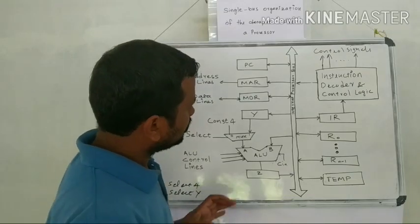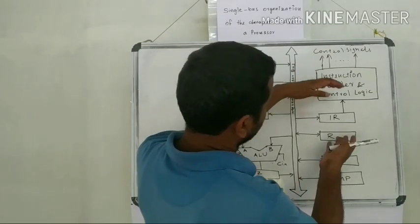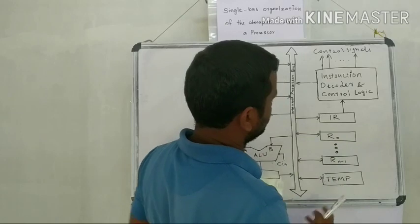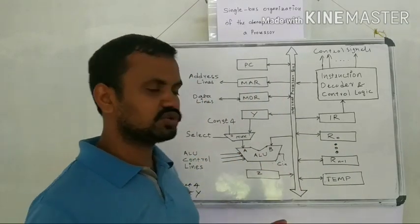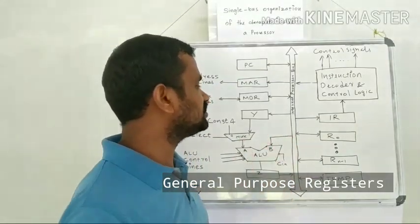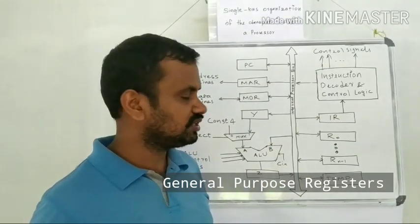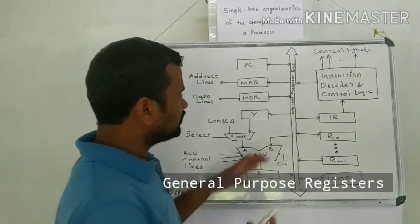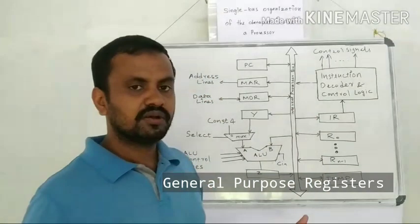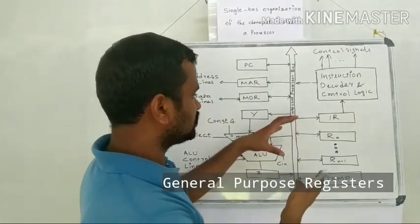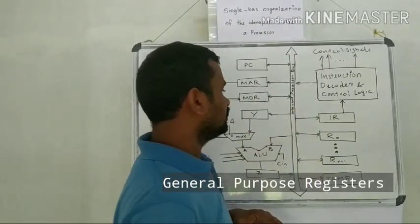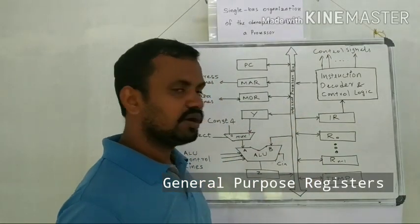And another component is these registers R0 through Rn-1. The number of registers depends on the type of processor. And these registers are used for programming purposes. When programming, the programmer can use these registers to write a program or include them in their programs.